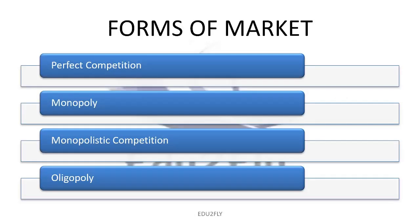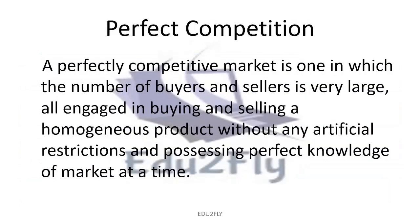Now, let's talk about market structures and market forms. Basically, there are 4 types of market structures: perfect competition, monopoly, monopolistic competition, and oligopoly. First, we will study perfect competition.